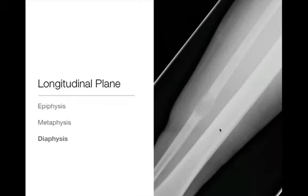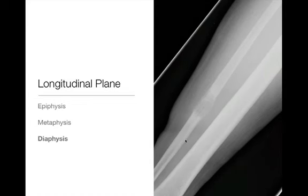Next up is diaphysis. This is an example of a diaphyseal lesion — a geographic lytic lesion with a wide zone of transition and periosteal reaction, centered in the diaphysis of the fibula. Because of the wide zone of transition and periosteal reaction, we start worrying about more aggressive things. This turned out to be a metastatic lesion in this case.